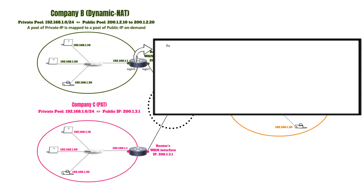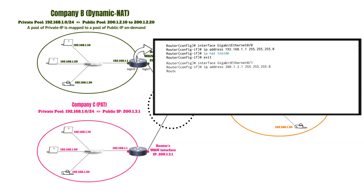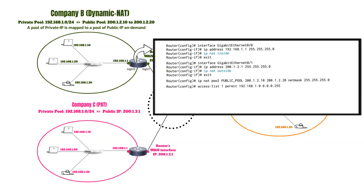Now let's take a look at the dynamic NAT configuration on a Cisco router. The inside and outside interfaces are configured the same as in the previous example. Then, we create a pool of public IP addresses called 'public pool', which includes a range from 200.1.2.10 to 200.1.2.20. These IPs will be dynamically assigned to internal devices as they access the internet, allowing multiple devices within the internal network to share these public IPs. Next, an access control list is used to specify which internal traffic should be translated by NAT. In this case, the ACL permits all traffic from the 192.168.1.0/24 network for translation.